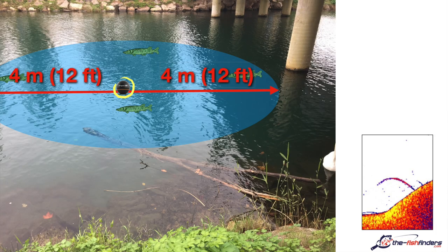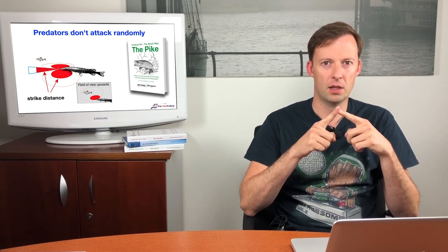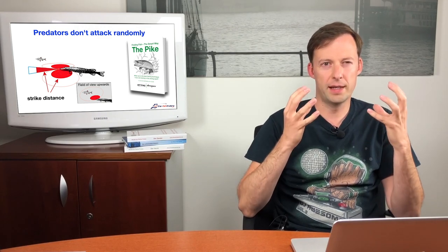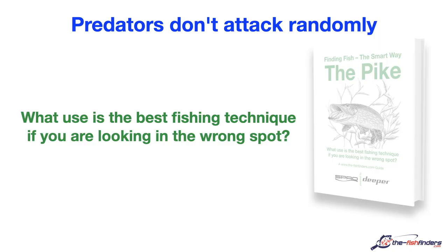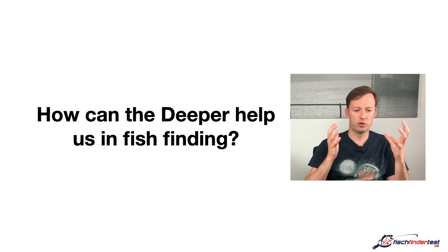Now this is important. If we recall our picture, where is our Deeper? There is a fish arch located in an area of 2 to 4 meters, that is 6 to 12 feet, around the Deeper. So if I know that the pike needs a strike distance of only a few centimeters or inches, then there is no point in pulling my bait 2 meters or 6 feet away from the fish. For this reason, I need a relatively precise idea of where the fish is relative to my Deeper, and how wide the area covered by my Deeper is. Our philosophy is: what use is the best fishing technique if you are looking in the wrong spot? With the Deeper, our bait has to get as close as possible to the predator.